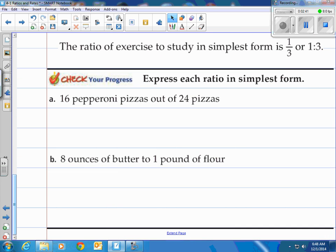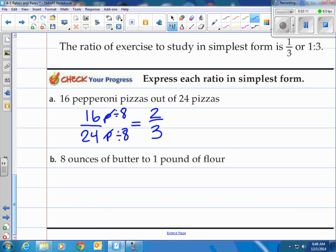Alright, express each ratio in simplest form on your own here. Try these A and B. Come back see how you do after I do that. Alright, sixteen pepperoni pizzas out of twenty four pizzas. Simply put your sixteen over twenty four. I'm gonna have those canceled out anyways. And I'm gonna reduce sixteen over twenty four. What goes into sixteen that also goes into twenty four? Eight. So I'm literally just reducing this by dividing by eight, and I've got myself two on top and three on bottom. So it's two to three.